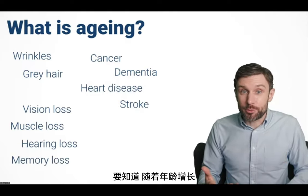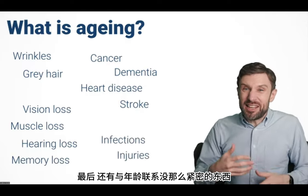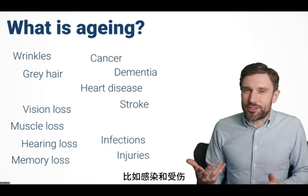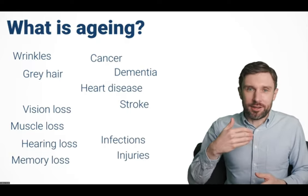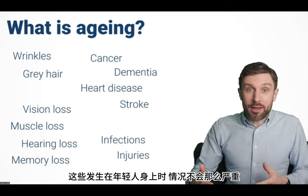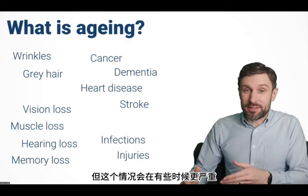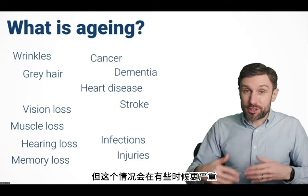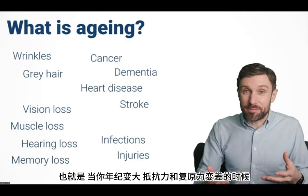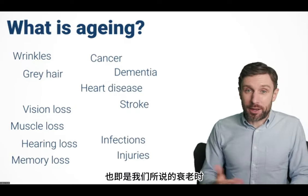Finally, there are things that aren't strictly age-related — infections and injuries, for example. A young person can get the flu, COVID, or break a bone, but it'll be much less severe. When you're older, your body is less resilient, making these conditions much more serious. This collection of things is what we mean by aging.